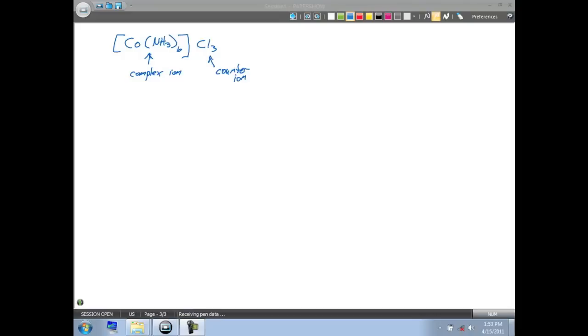So this is how we commonly now denote these particular complexes. Notice that if we have three chlorides on the outside of these brackets, that means our complex ion has to have a plus three charge. And the charge of the complex ion is going to be dictated by how many counter ions that we have on that particular complex.